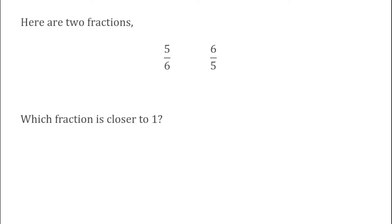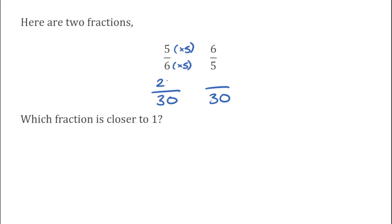For our final question today we've got two fractions: 5 over 6 and 6 over 5. Which fraction is closer to 1? Whenever we're asked to compare fractions, it's easier if we have them over the same denominator. So we're looking for the lowest common multiple of 6 and 5, which is 30. For 5 over 6, we multiply the denominator by 5 to get 30, so we also multiply the numerator 5 by 5 to get 25. So 5 over 6 is equivalent to 25 over 30.